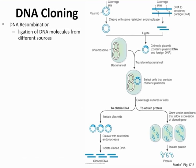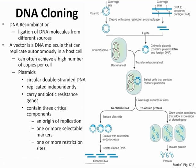Here's a simplified scheme of DNA cloning. A vector is a DNA molecule that can replicate autonomously in the host cell. An example of a vector is a plasmid, which carries the foreign DNA. We cleave certain sites of a DNA sequence to get the foreign DNA, then ligate the plasmid and foreign DNA together to make a chimeric plasmid. That chimeric plasmid is inserted inside a bacterial cell, which makes copies of the plasmid — that's cloning.